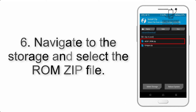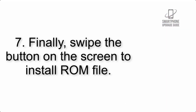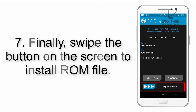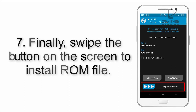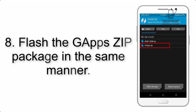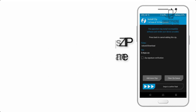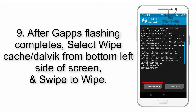Step 5: Go back to the recovery main screen and tap on the Install button. Step 6: Navigate to the storage and select the ROM zip file. Step 7: Finally, swipe the button on the screen to install the ROM file.